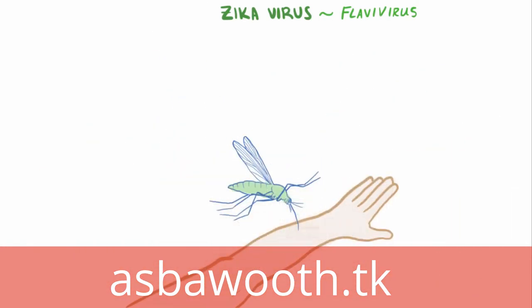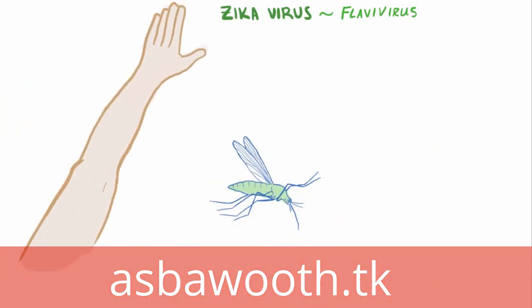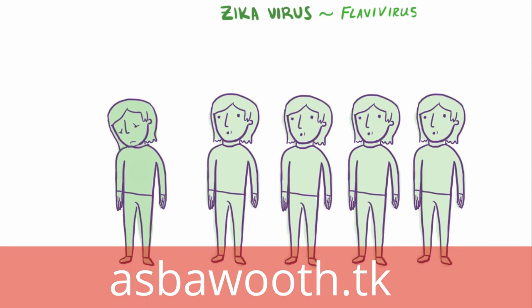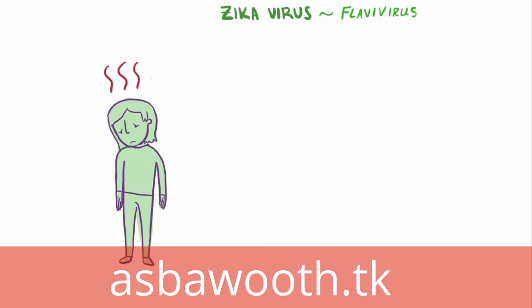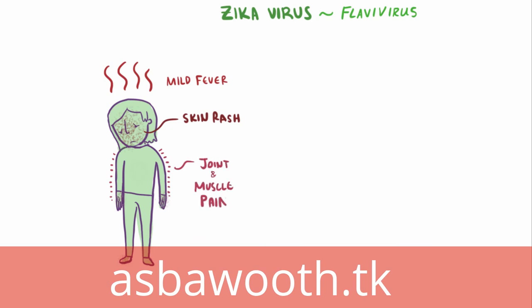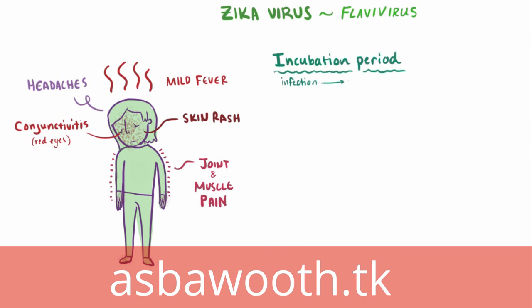As bleak as all that sounds, our immune system is actually pretty good at fighting off Zika virus, and only one in five people get sick from infection — often the others won't even notice they've been infected. Common symptoms when patients have them are mild fever and skin rash, but some also experience muscle and joint pain, headaches, and conjunctivitis, or red eyes. The incubation period — the time from infection to symptoms — isn't fully known, but it's thought to be from a few days to a week.